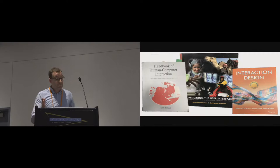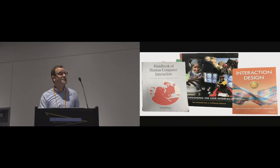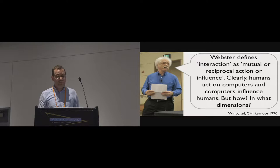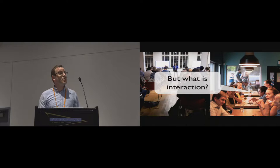So back home, I would look for a better answer. But really, common textbooks in HCI don't define interaction or present different ways of thinking about interaction in any depth. Even some of the best people in the field don't have clear answers either. So Terry Winograd in a 1990 keynote noted that Webster's defined interaction as mutual or reciprocal action or influence. So clearly humans influence computers and computers influence humans, but how and in what dimensions? So it seems that this question is surprisingly tricky.